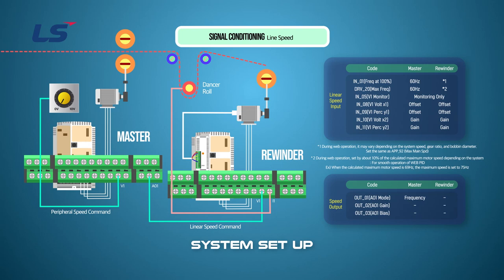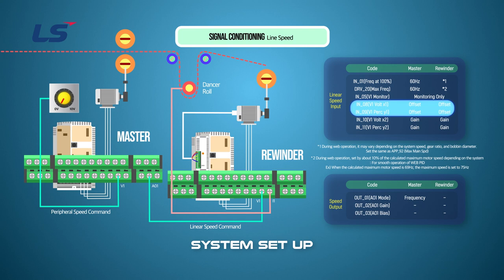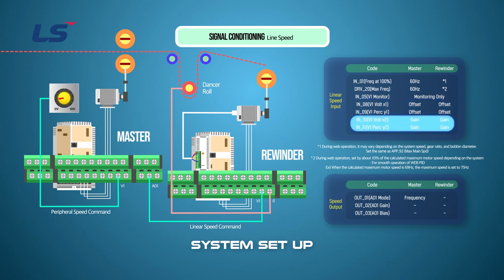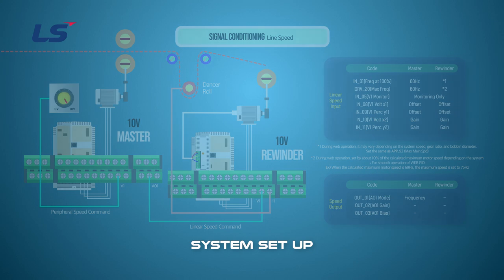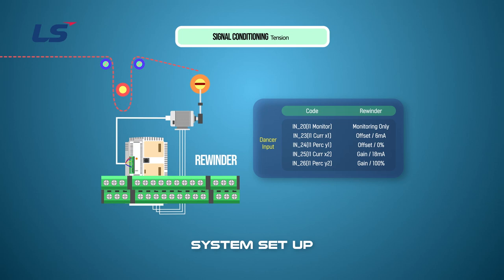The offset and gain of the signal must be adjusted to control the speed between master and rewinder. Offset and gain adjustments of tension feedback sensors required for rewinder web PID control are also required. Monitor the input status of each signal on the inverter parameter to see if the exact value comes in. Adjust the offset so that the monitoring value is 0 volts when the analog input is at its lowest, and adjust the gain so that the monitoring value is 10 volts when the analog input is at its highest. When signal adjustment for line speed is completed, signal adjustment for tension is required.